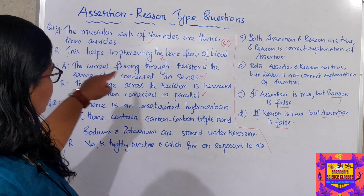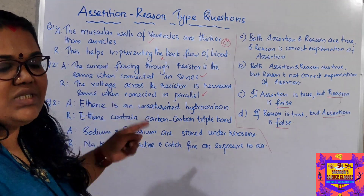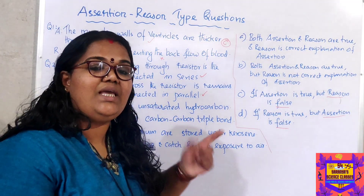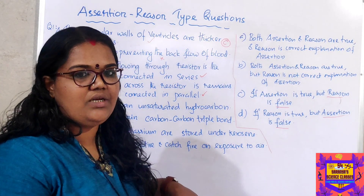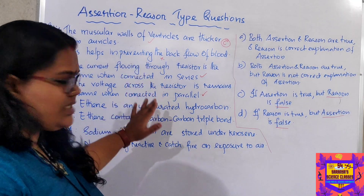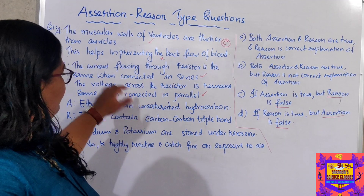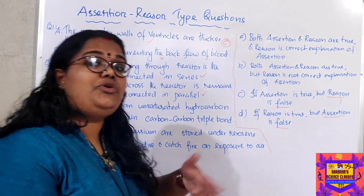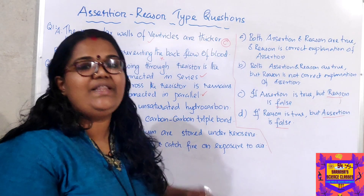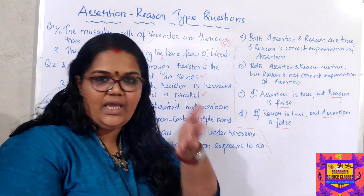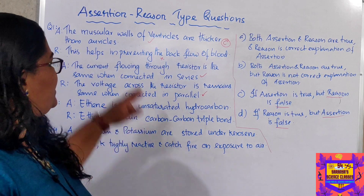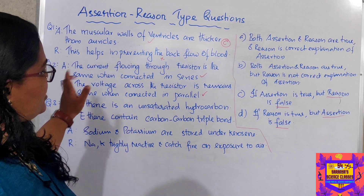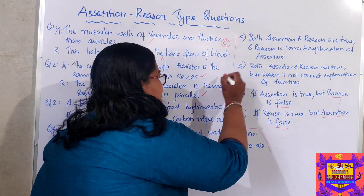Both statements are correct. Now I read them together: current flowing through the resistor is the same when connected in series — and voltage across the resistor remains the same when connected in parallel. These two have no relation to each other. The reason must explain why the current is the same in series — that should be the explanation. But the reason is talking about parallel circuits and voltage, which is unrelated. So both statements are correct, but the reason is not the correct explanation of the assertion. Our option is B.